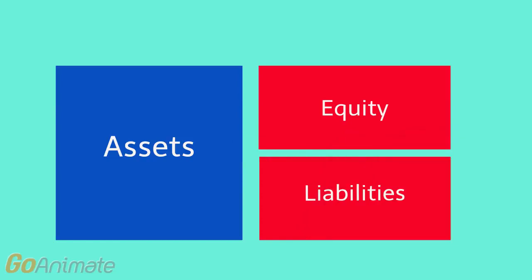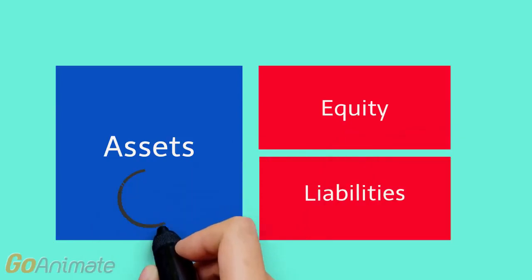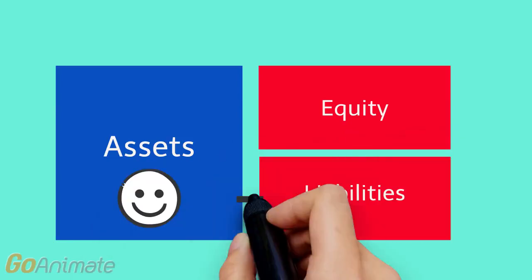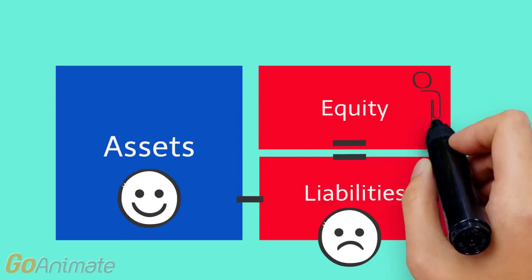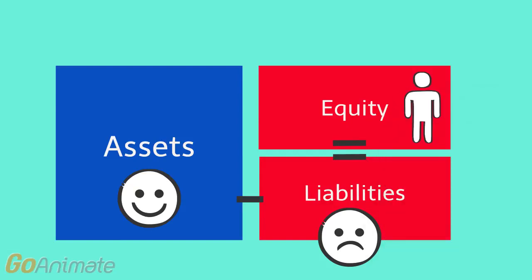You should now be able to see that the assets, the happy face, minus the liabilities, the sad face, is going to give us the equity of the business — that's what the owners put into the business.